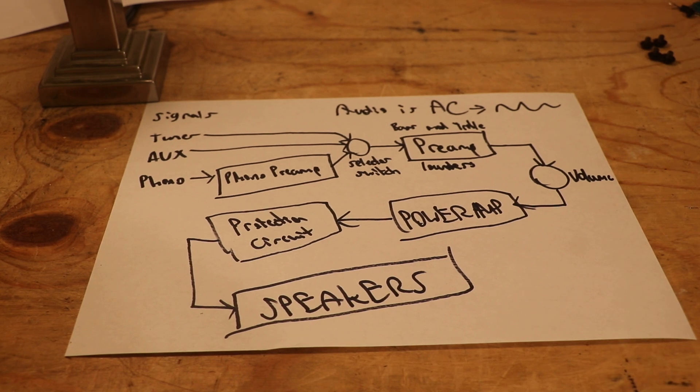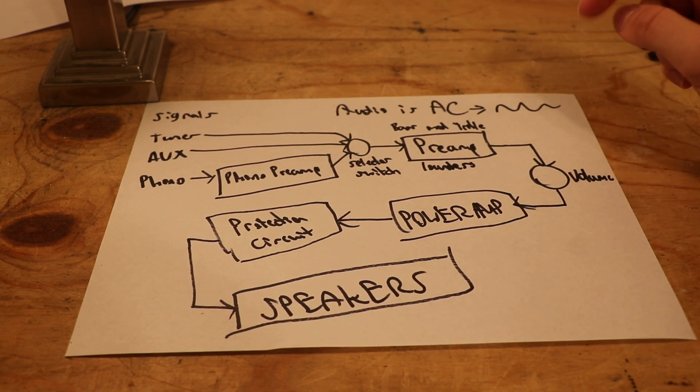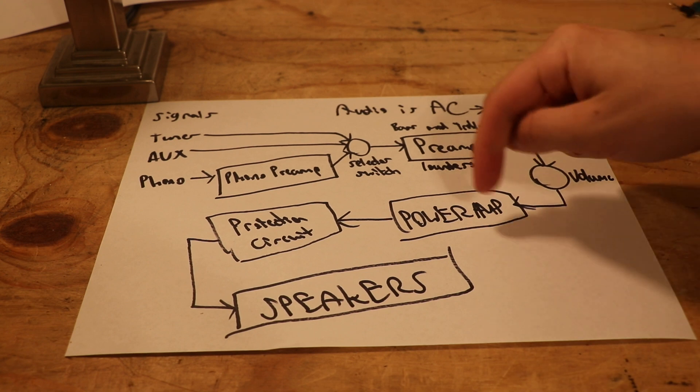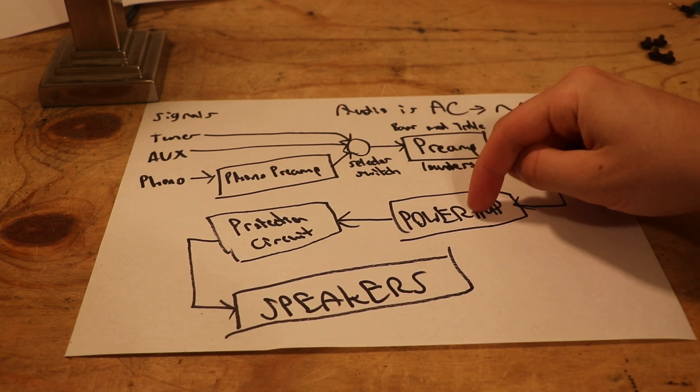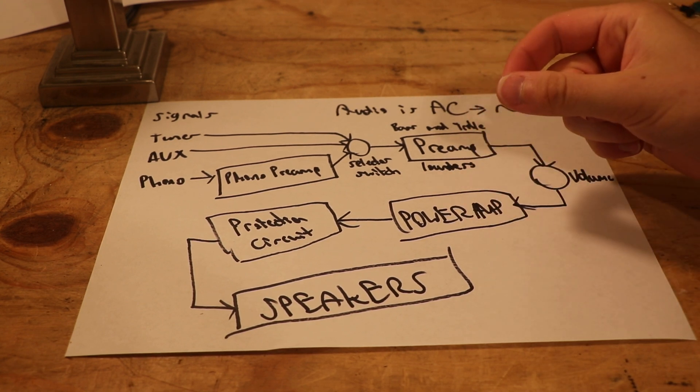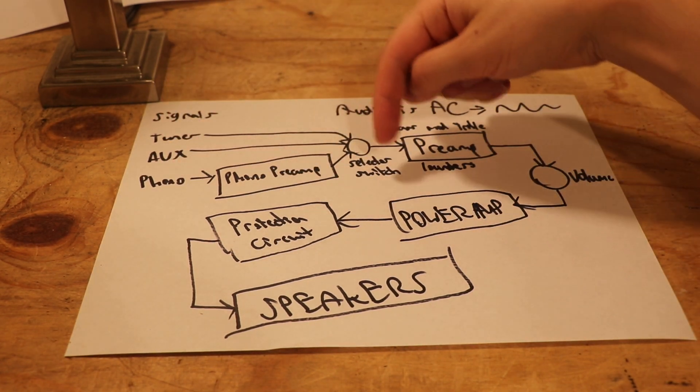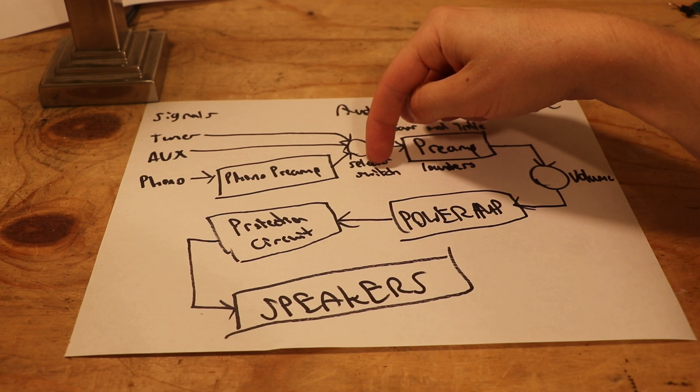The reason this is so useful is it allows you to understand what might be going wrong with your receiver. If you hear crackling and stuff and changing the volume doesn't do anything to adjust the volume of the crackling, it stays the same, you very likely have an issue right here. So, what are you going to do? You're going to follow your signal. You're going to send a signal through aux, likely, and you'll follow it into the selector switch. Is it there? Yes.